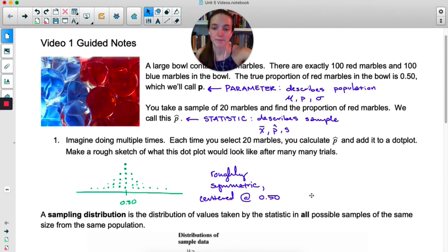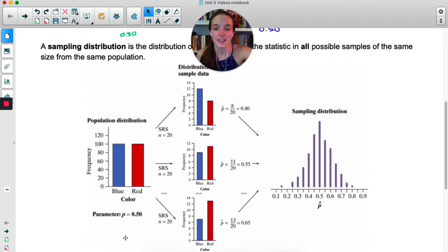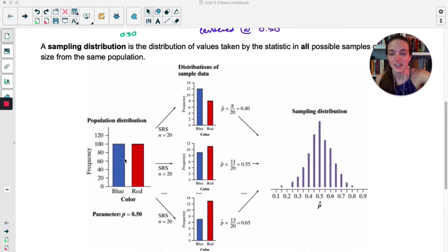So let's look at an example here. On the left we have the population distribution of the red and the blue marbles. So 50% are blue, 50% are red. The true parameter p is 0.5. Then here's three different sample distributions. Maybe the first time we take out 20 marbles we get 40% red. We put those back. The second time we get 55% red. Put them back. The third time we get 65% red. Each one of these is called a sample distribution.